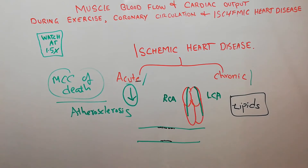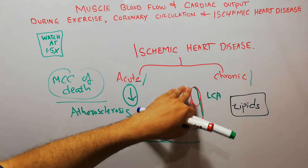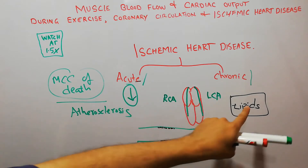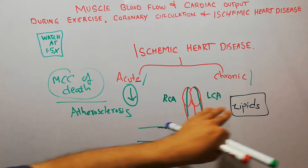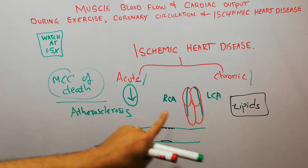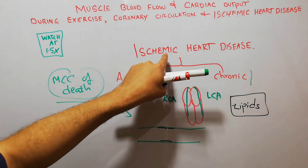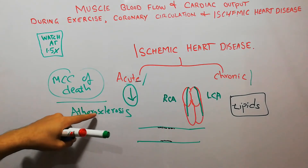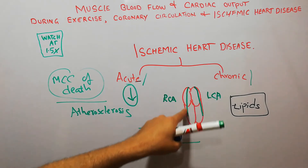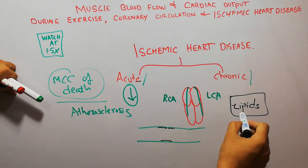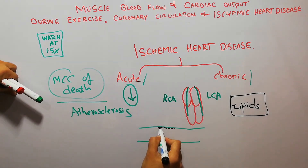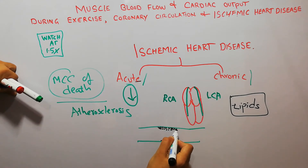Lipids — simply known as fats, or you can call it cholesterol — get deposited in the coronary vessels. Lipids can get deposited in any blood vessel in the human body, but since we are discussing ischemic heart disease, we are discussing atherosclerosis specifically in the coronary artery.